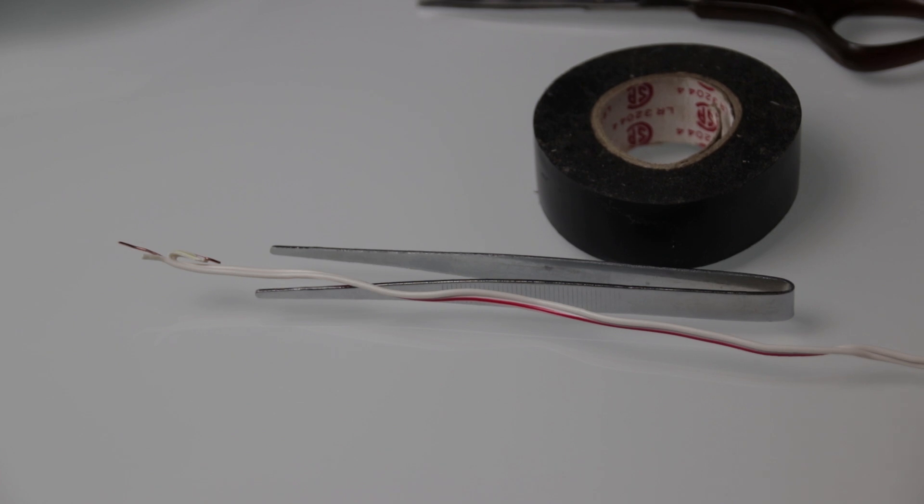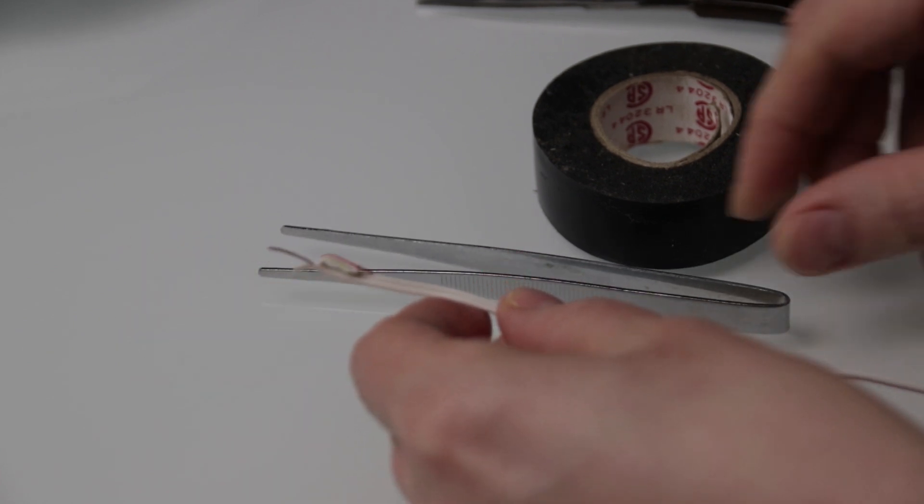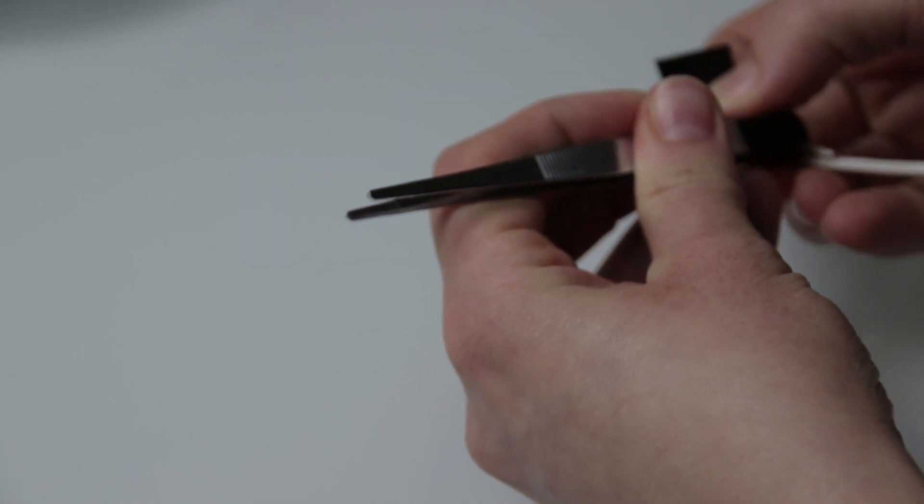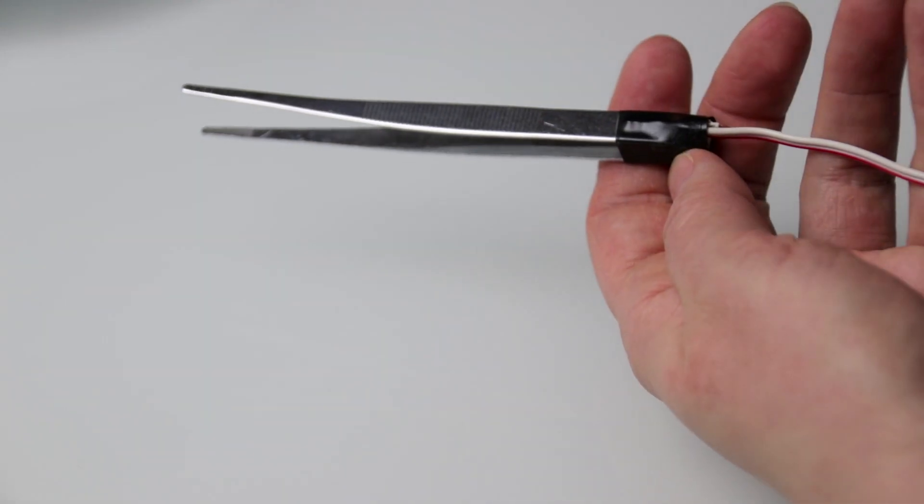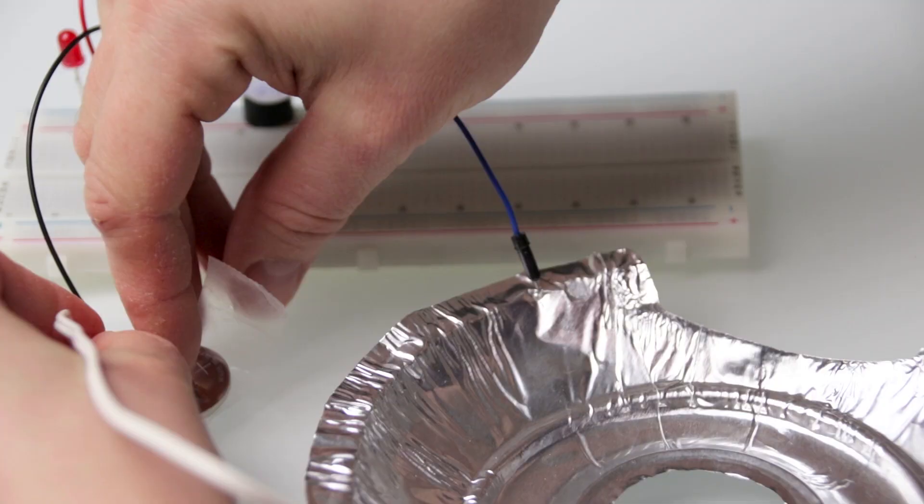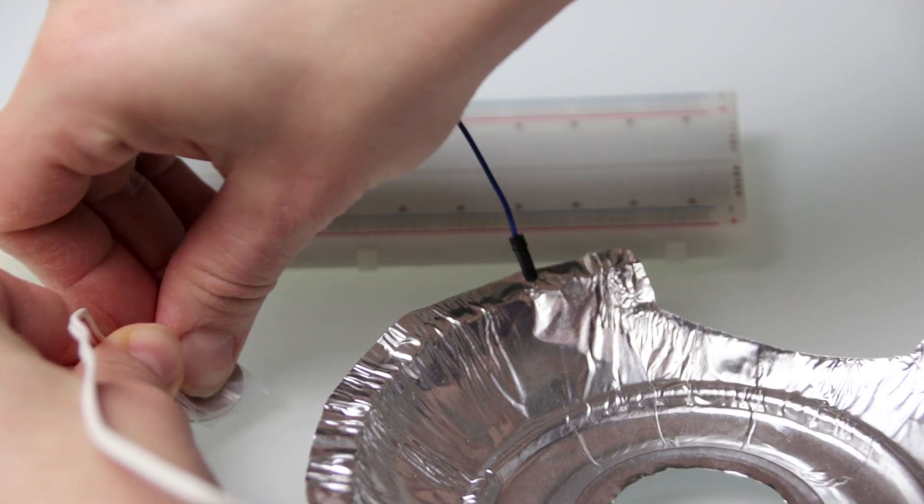I tried to solder the wire onto the tweezers but they didn't bond for some reason, so I'm just going to use some electrical tape to hold it in place. I'm connecting the tweezers to the positive side of the battery.